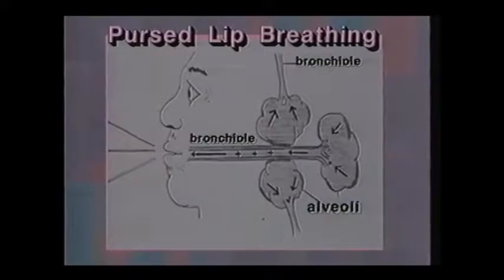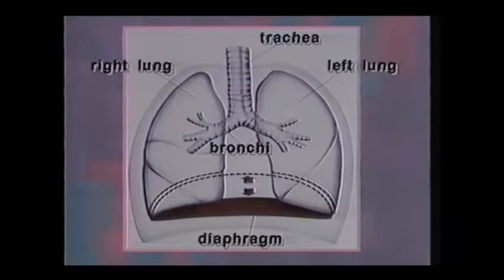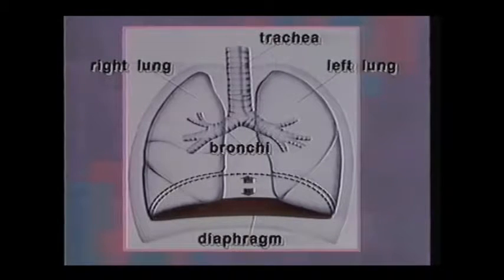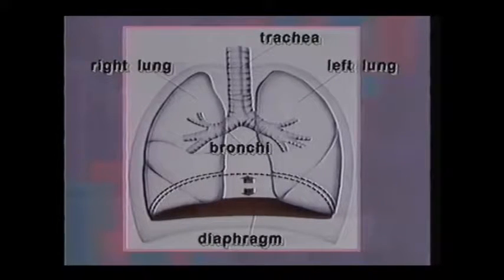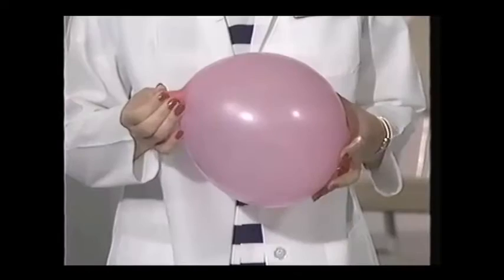Pursed lip breathing creates a positive back pressure in the airways — like partially plugging the end of a garden hose with your thumb causes it to expand with pressure. This pressure is believed to keep your airways open longer, allowing better evacuation of stale air and intake of fresh oxygen. The main muscle of breathing is this large dome-shaped muscle at the base of the chest cavity, the diaphragm. During inspiration, the diaphragm contracts and moves down, which enlarges the chest cavity and allows air to be sucked into the lungs.